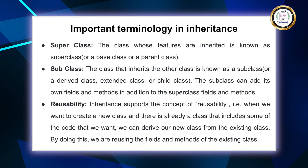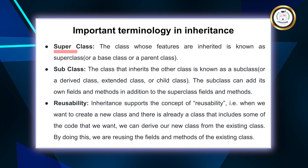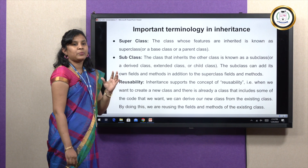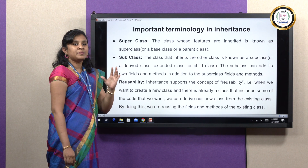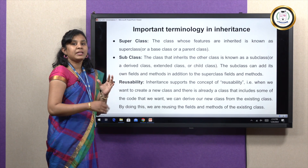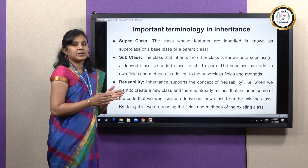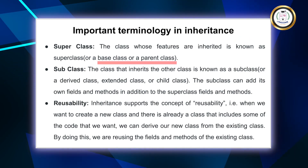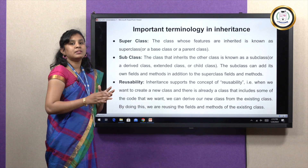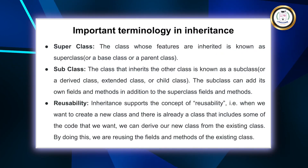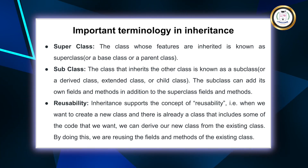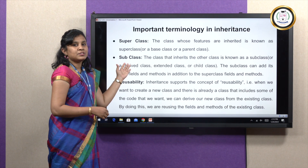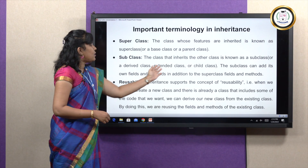These are the various terminologies seen throughout inheritance: Superclass, Subclass, and Reusability. The Superclass is the main base class where we have the general properties used by many other classes — you can also call it the Base Class or Parent Class. The properties of the Superclass can be used by all the Subclasses. The Subclass takes up the properties of the Base Class and can have additional properties; it can also be called the Derived Class or Child Class.